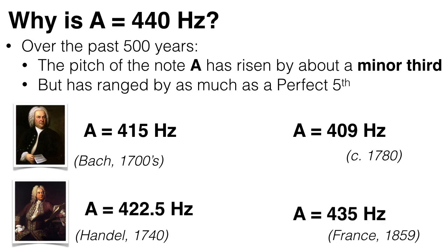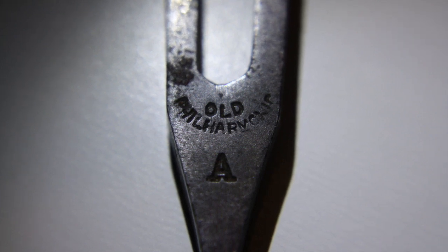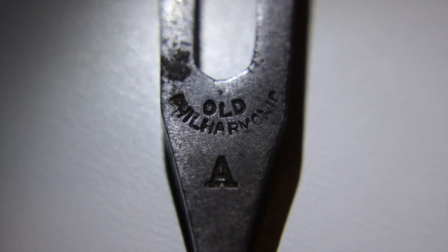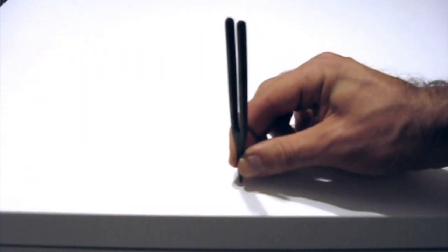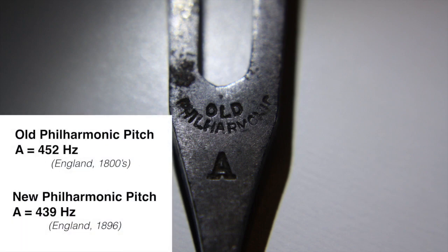Some countries set their own standard notes. For example, the French government passed a law in 1859 which set the note A at 435 hertz. And a tuning fork made in the 1800s in England is engraved as the note A tuned to the old philharmonic pitch, which was 452 hertz. This was then replaced in 1896 by the new philharmonic pitch, with A at 439 hertz.